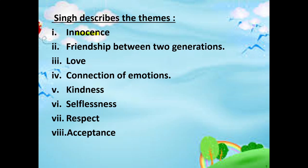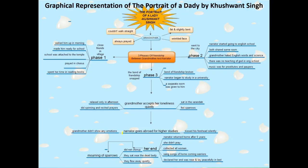The significant themes of this chapter include: the theme of innocence, friendship between two generations — grandmother and grandson — love and connection of emotions, kindness towards animals, selflessness in the grandmother's approach to raising the narrator, respect shown by the grandson, and acceptance, as the grandmother quietly accepted the change in their relationship without being hurt by it.